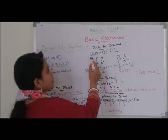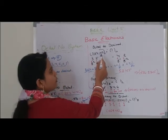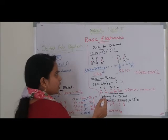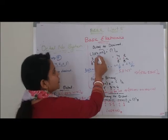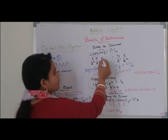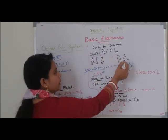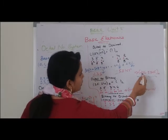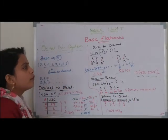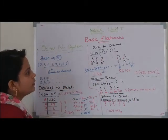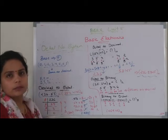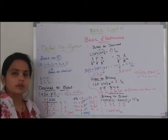जैसे 354.42 को decimal में convert करना होगा तो 354 को हम अलग convert करेंगे और 0.42 को अलग convert करेंगे, and then we write them together. Like 236.53125. So I hope आपको octal to decimal number conversion भी समझ में आया होगा।